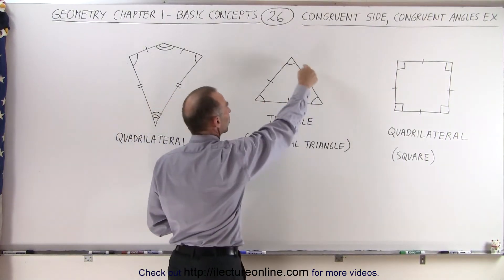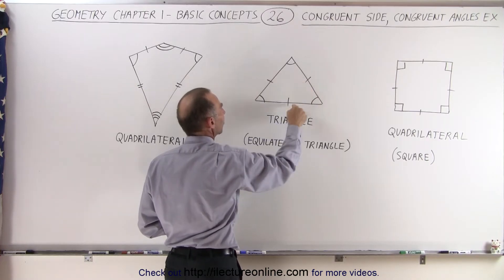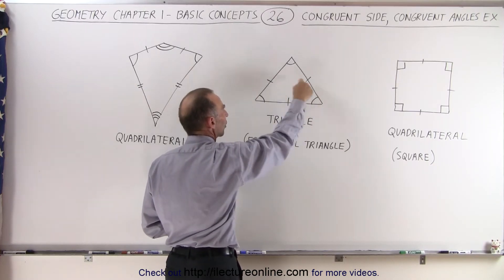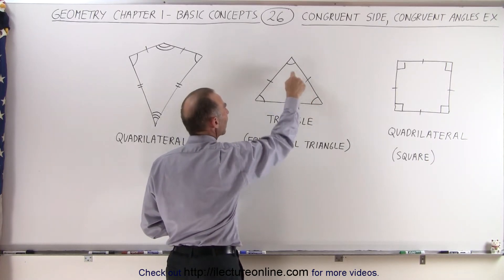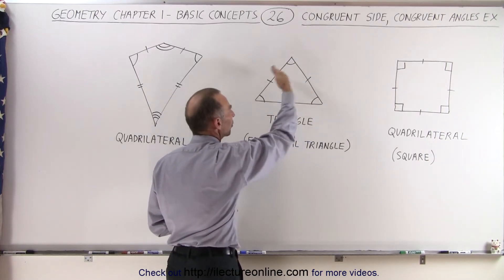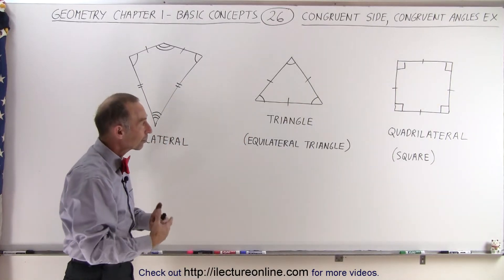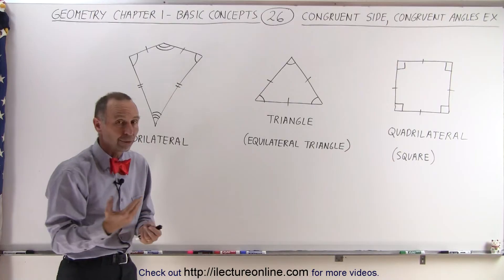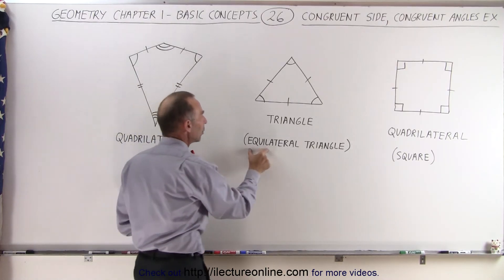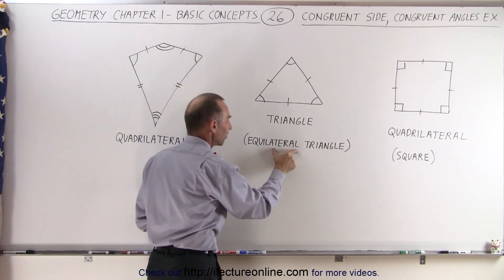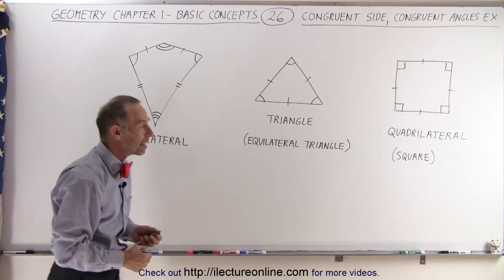Here we have a triangle. The symbols indicate that the three sides have the same length, so these three sides are congruent. These symbols here mean that the three angles have the same measure, so they are congruent angles — congruent sides and congruent angles. This triangle must therefore be an equilateral triangle. Equi means the same, lateral means sides — same sides triangle. That's literally what that means.